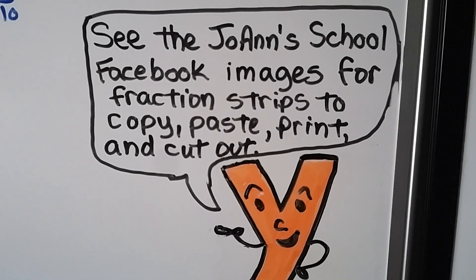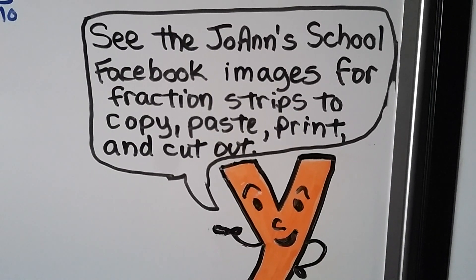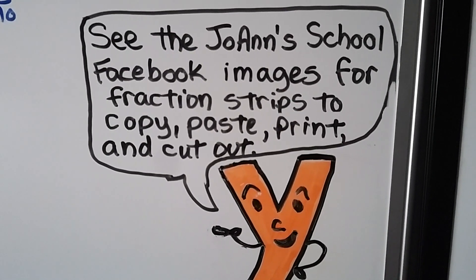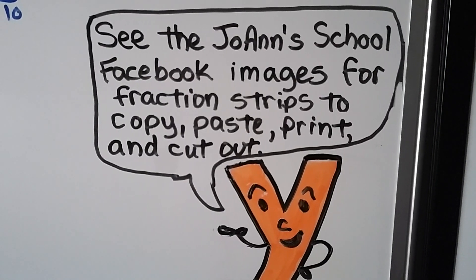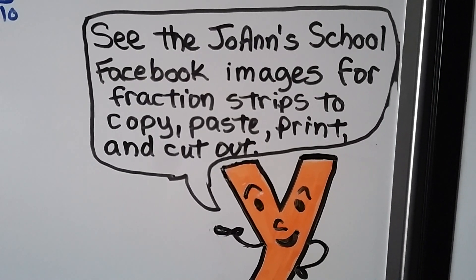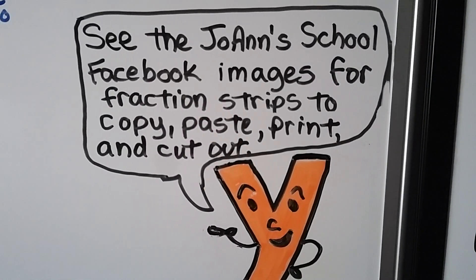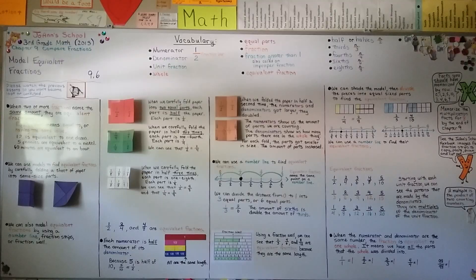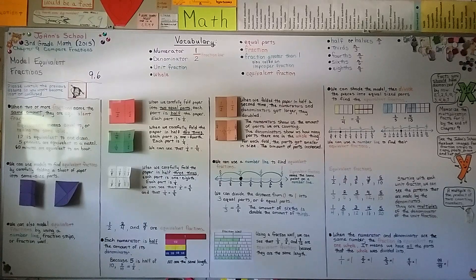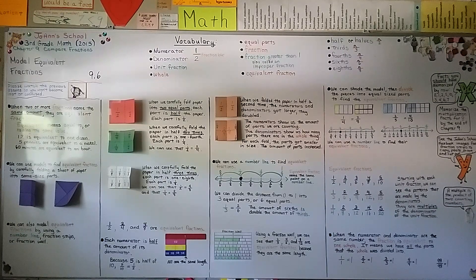Remember, you can go to my Facebook page for Joann School, to the image section, and you'll see the fraction strips and fraction walls that you can copy and paste, print them out, and cut each one out to use for your homework or to help model fractions. So now you know we can use a sheet of paper, a number line, a fraction wall, or fraction strips to model equivalent fractions. We've only got one more lesson to go for chapter nine. I hope you're working on your eight times table — your eight facts — because you need to have them memorized by the end of this chapter. I hope you have a wonderful day, and I'll see you next time. Bye.